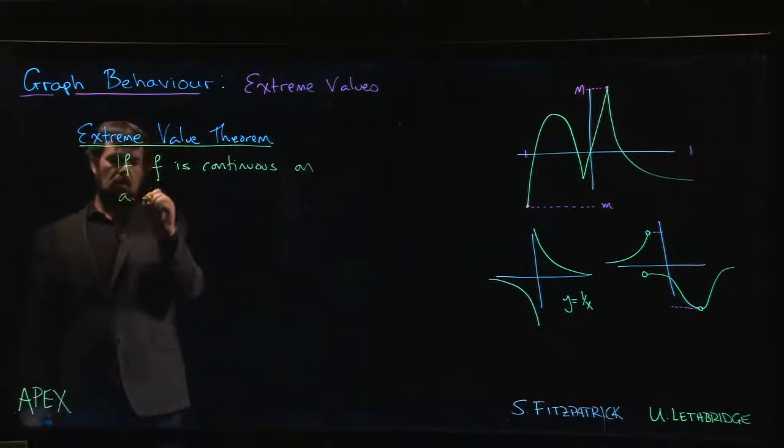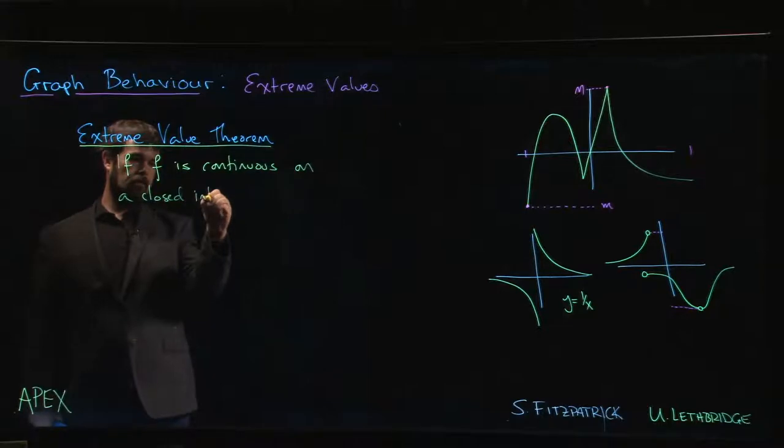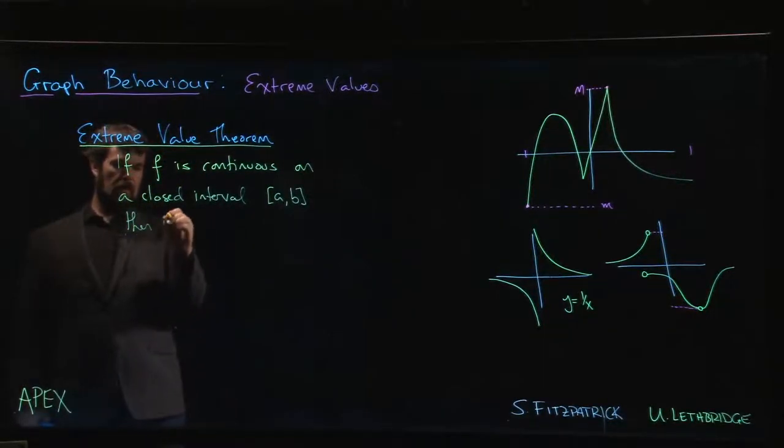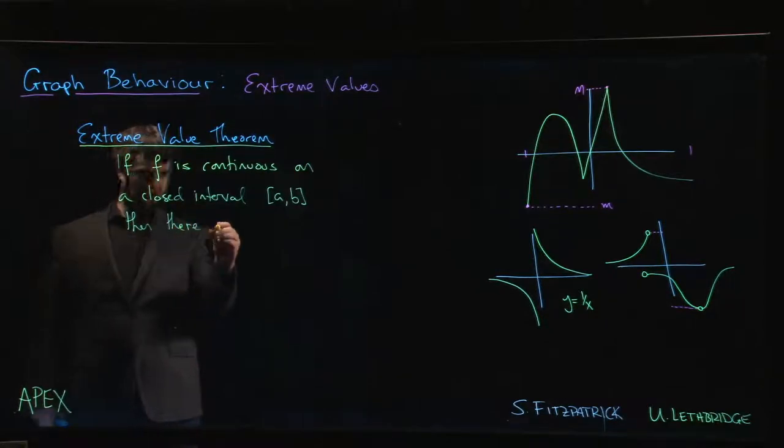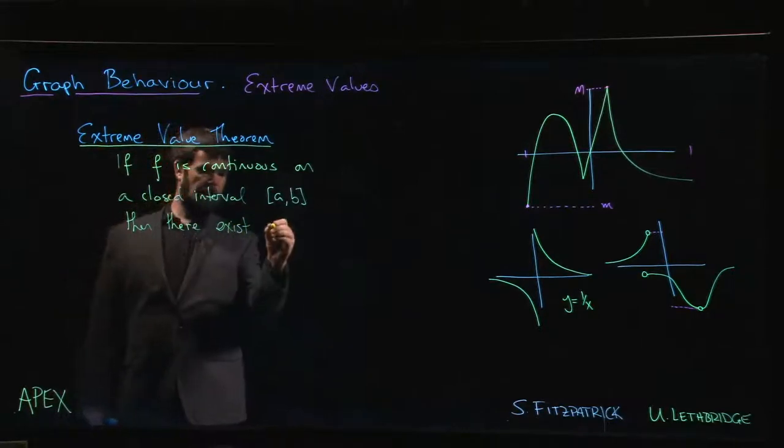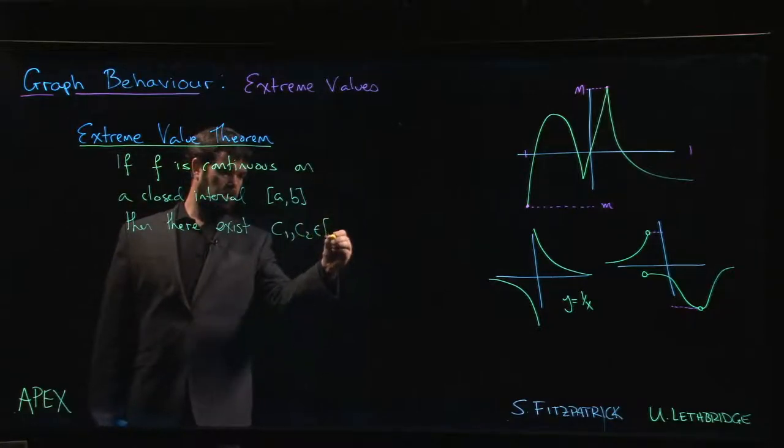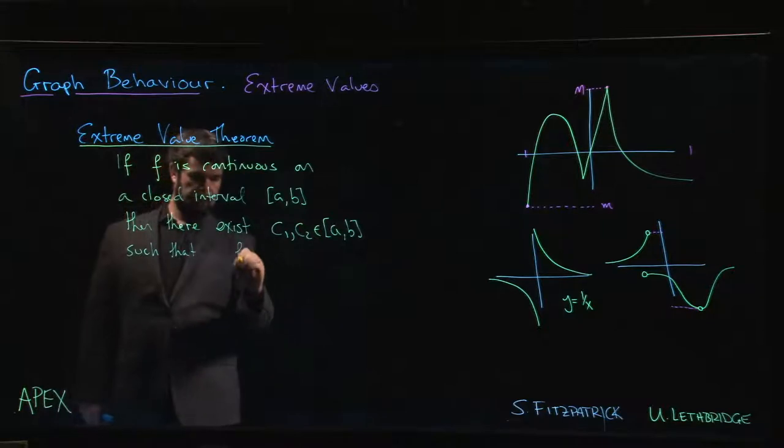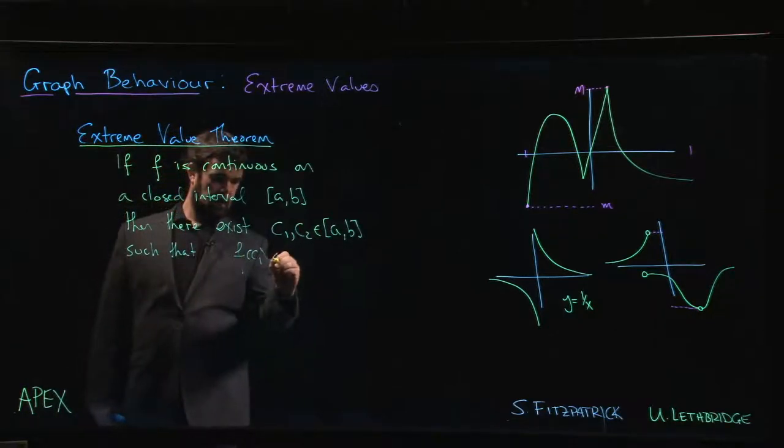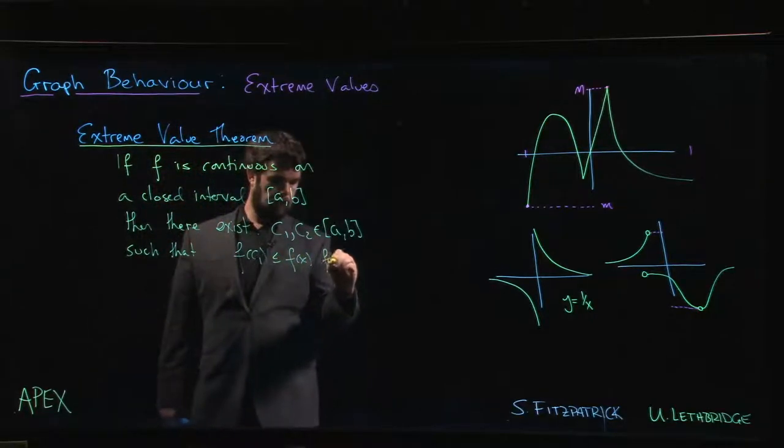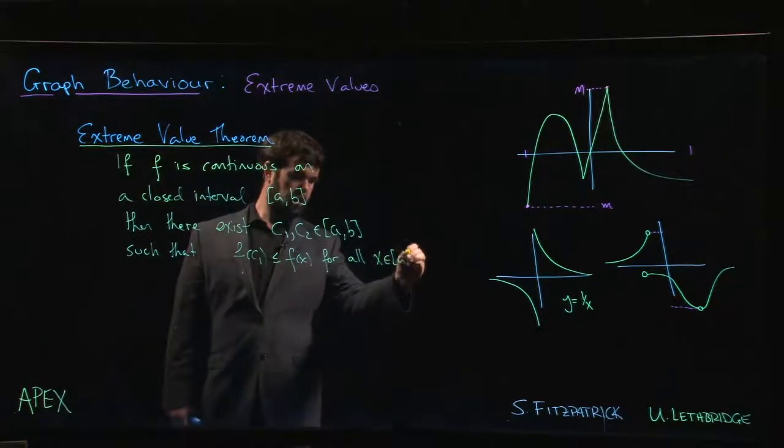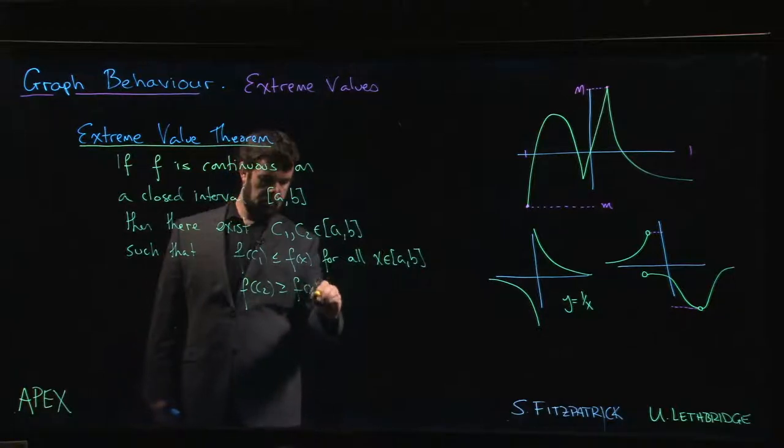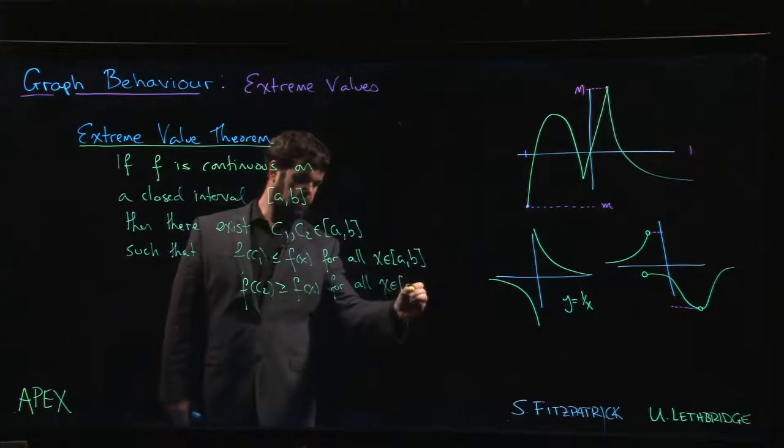continuous on a closed interval from a to b, then there are guaranteed to exist values, let's call them maybe c1 and c2 in [a,b] such that f of c1 is less than or equal to f of x for all x in [a,b] and f of c2 is bigger than or equal to f of x for all x in [a,b].